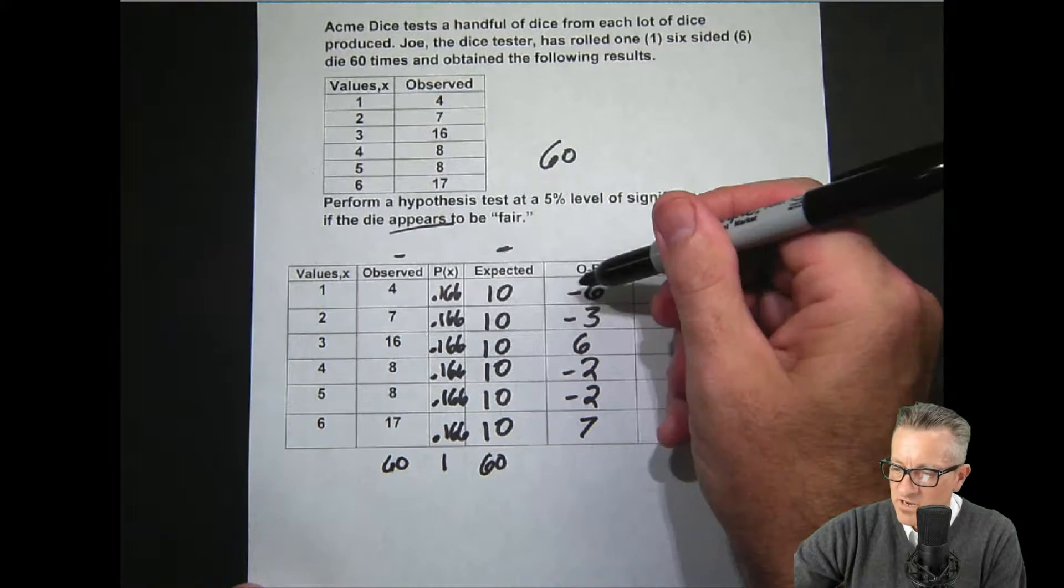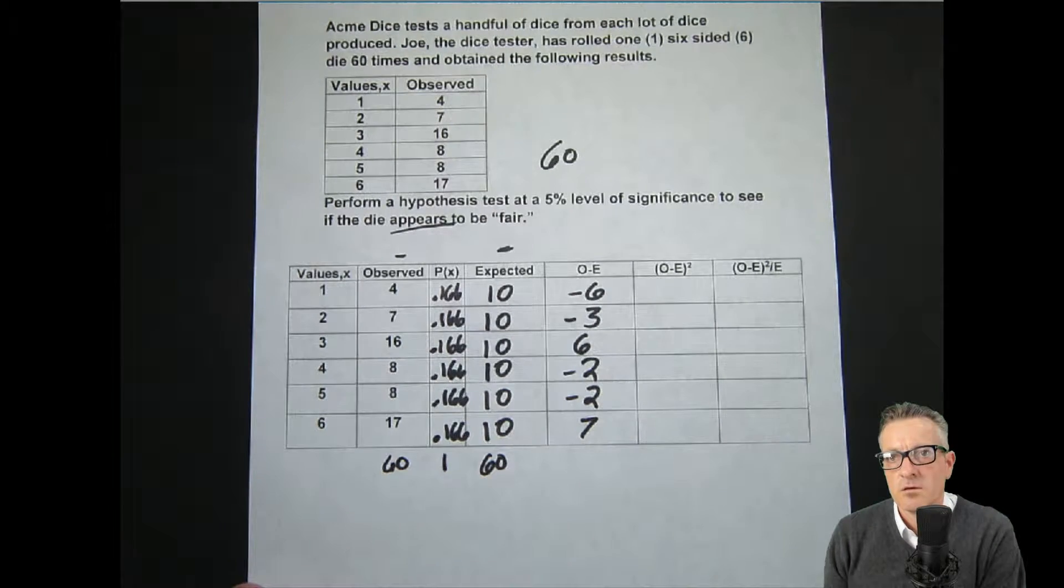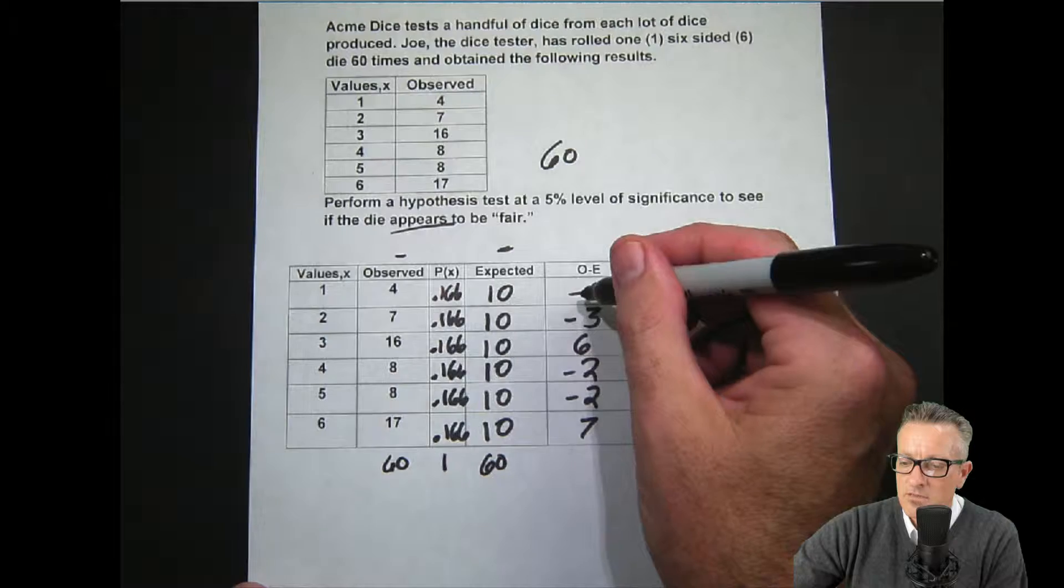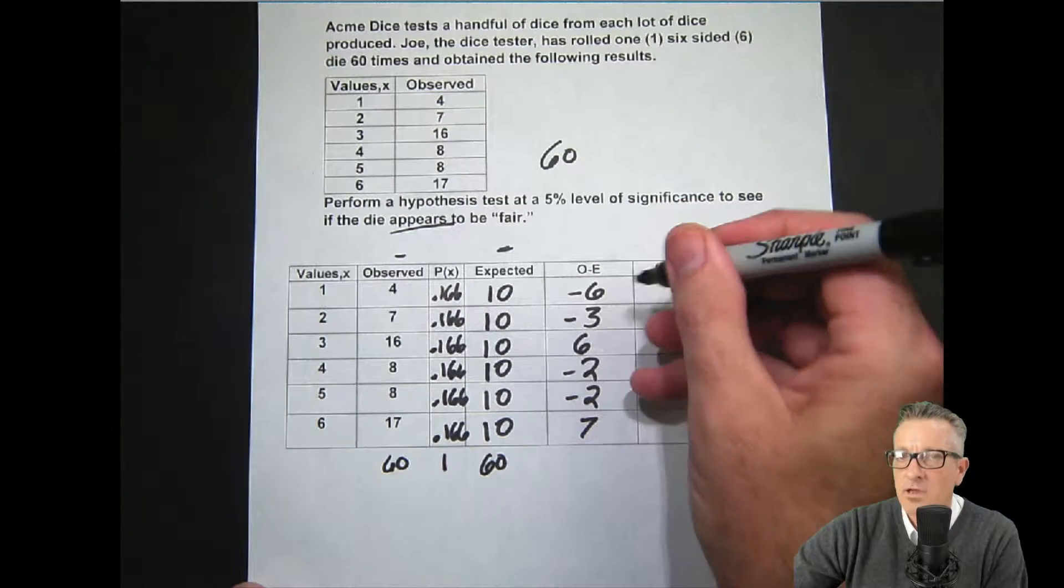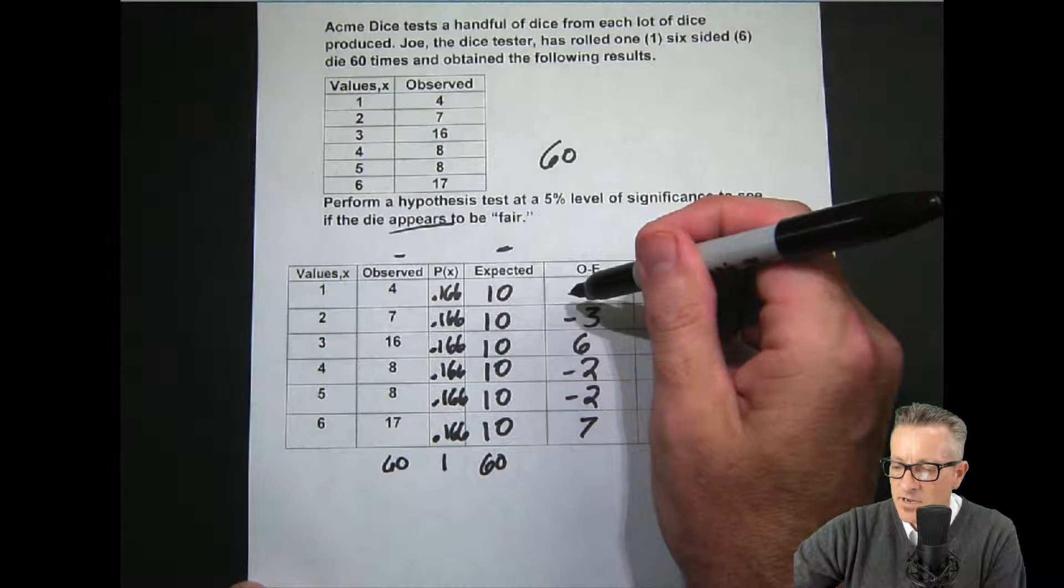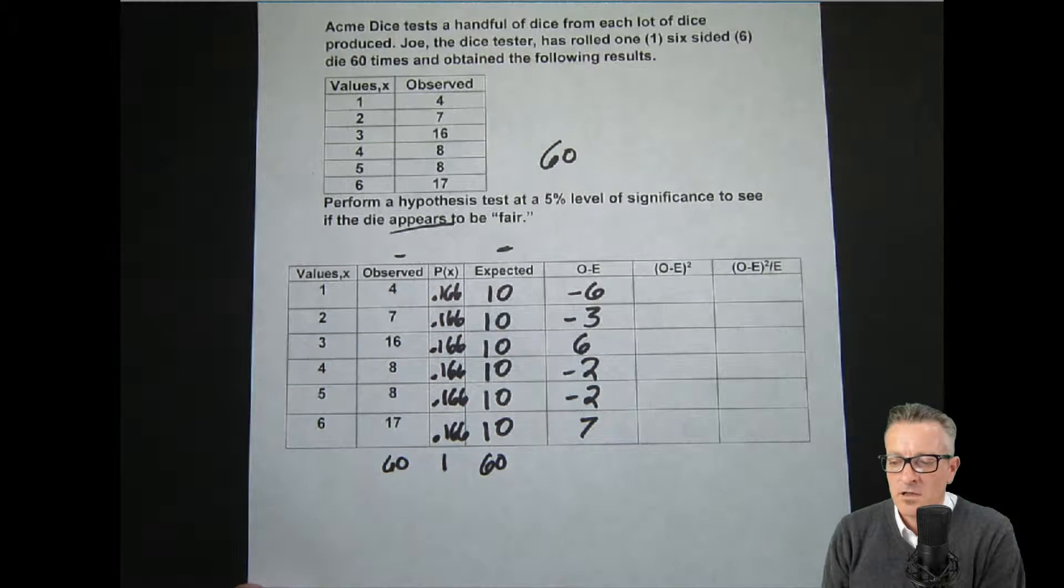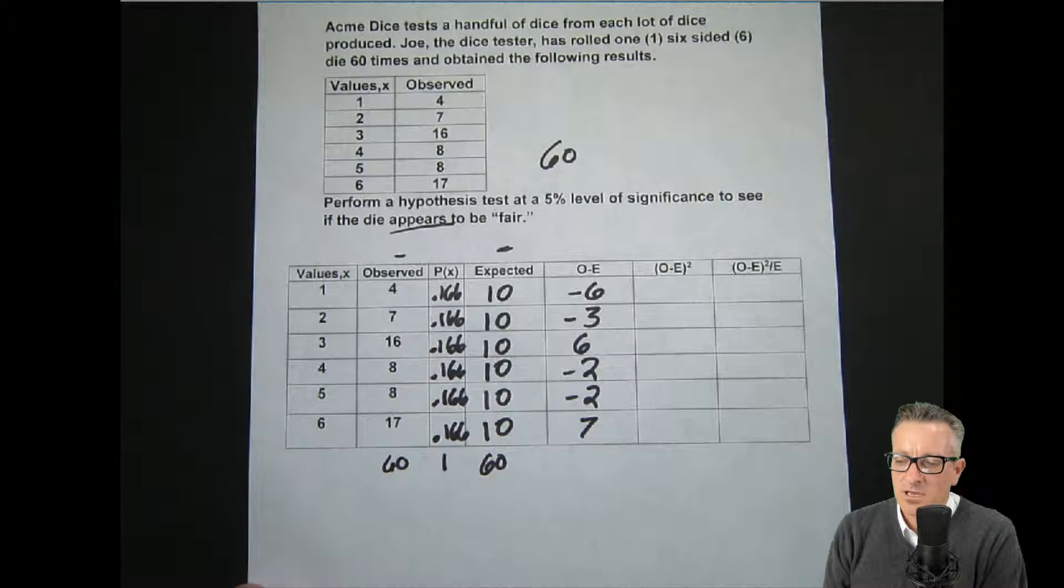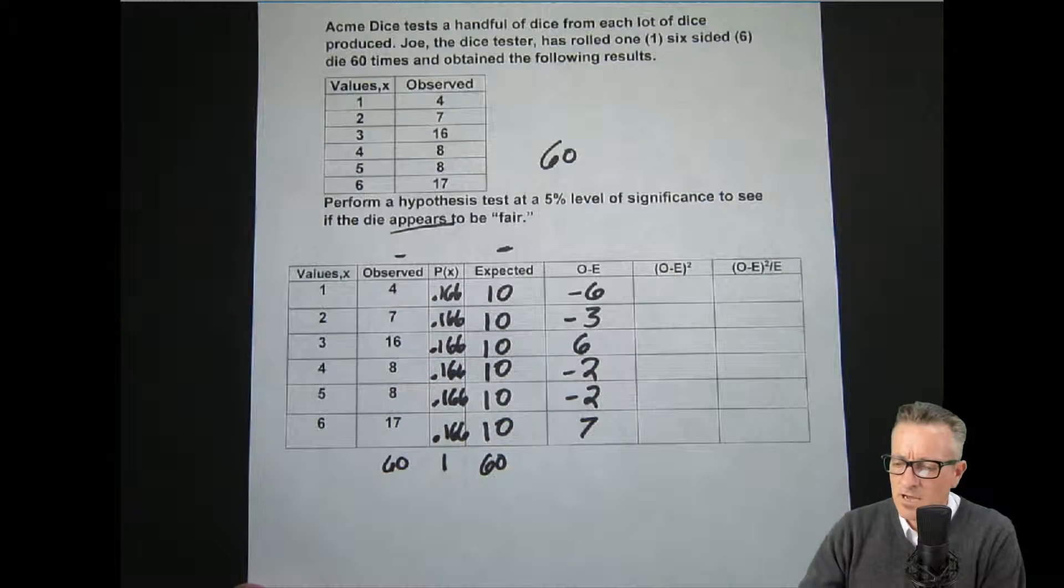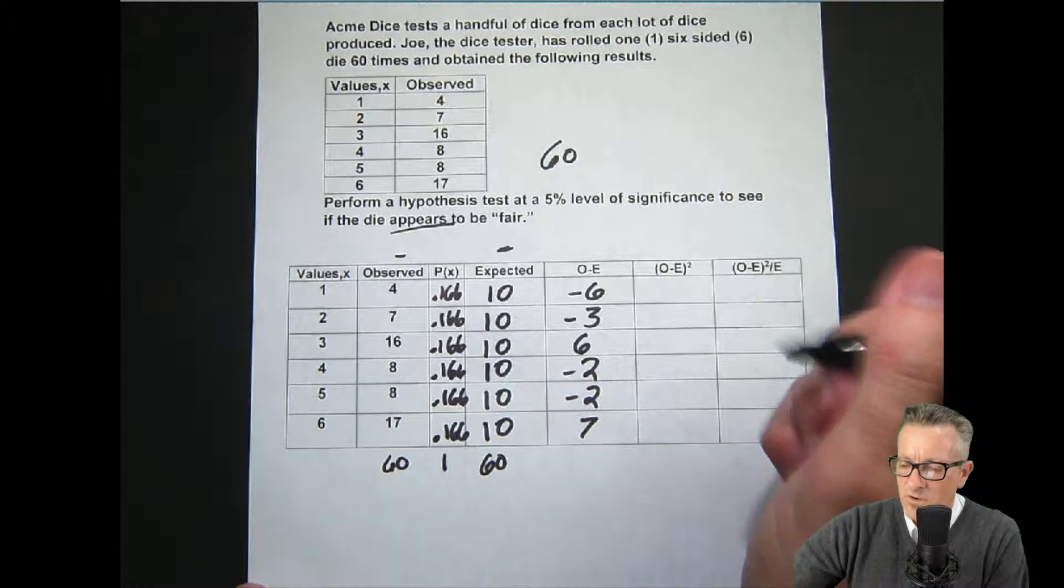So, we have negative 6, negative 3, 6, negative 2, negative 2, 7. And then in the next one, all that we're doing is squaring the difference. Now, when you do this, make sure you put, let's say you do this in your calculator, make sure you put parentheses around any negatives.